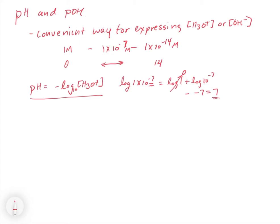We can think about this in terms of the pH scale. When we have a neutral solution, the concentration of H₃O⁺ is 1 times 10 to the minus 7, so the pH is equal to 7. In an acidic solution, the concentration becomes greater than 1 times 10 to the minus 7 — say, 1 times 10 to the minus 4 — and the pH is going to be a number that is smaller than 7.